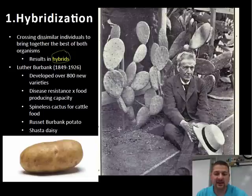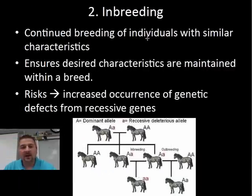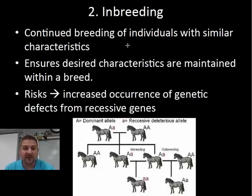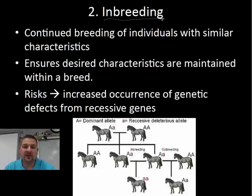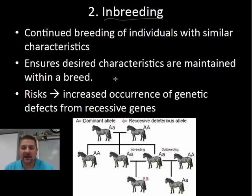The Shasta daisy is another example, and the list goes on and on. Part of the problem with hybridization is that once you get an individual or organism with the desired characteristics, maintaining those characteristics often leads to inbreeding. You have to breed like individuals to keep those same traits. This ensures desired characteristics are maintained within a breed.